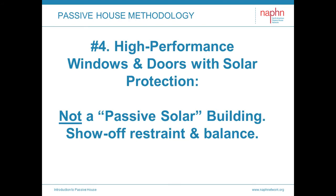Number four: high-performance windows and doors with solar protection. The flippant thinking here is to rid ourselves of the unfortunate association people make with past passive solar buildings. We must always be on guard to avoid over-glazing and the accompanying overheating. The passive house solar buildings of the 1970s and onward were over-glazed — typically out of balance and often uncomfortable. Let's be clear too that passive house buildings don't have tiny windows either — we're not building caves. Expansive views and abundant daylight are typical in passive house buildings.